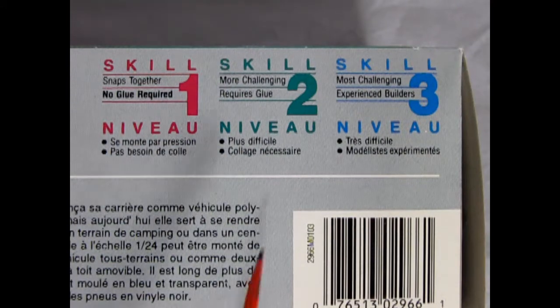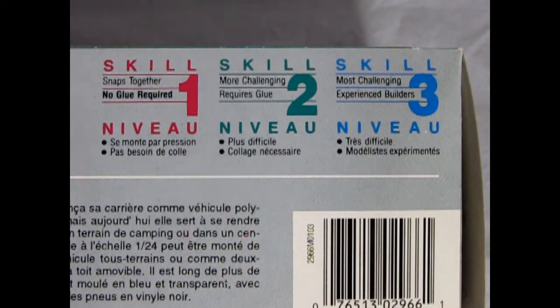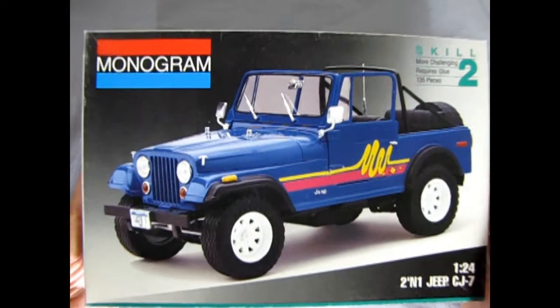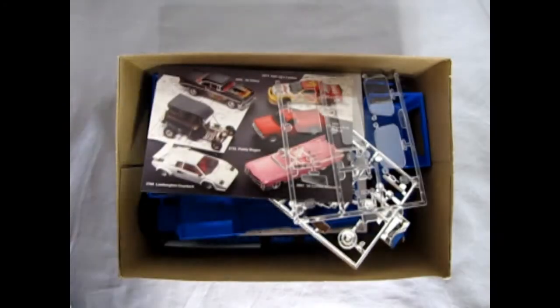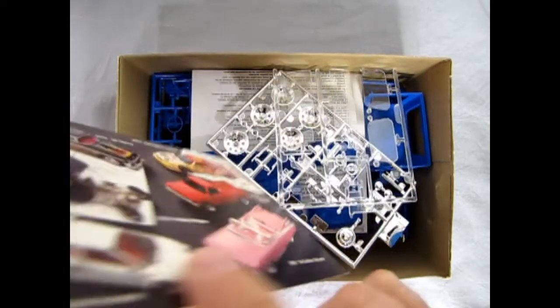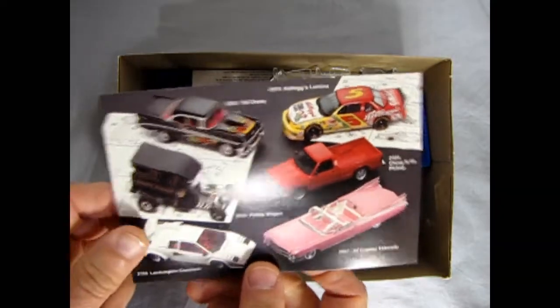This Jeep is a skill level 2 model kit designed for the intermediate builder. As we lift off the lid of our box we immediately see all our plastic parts as well as this great catalog picture from 1993.